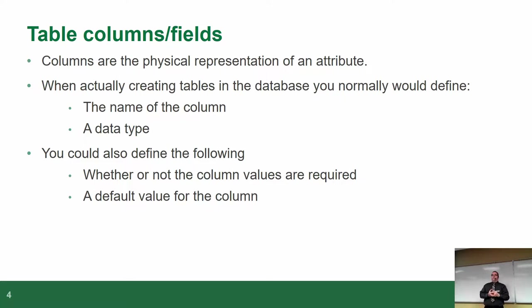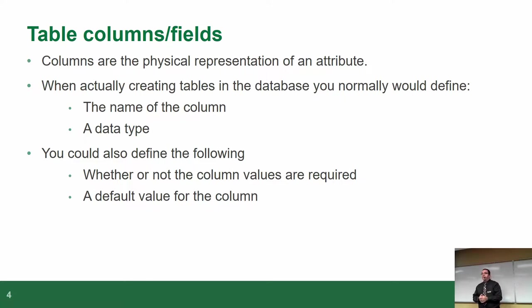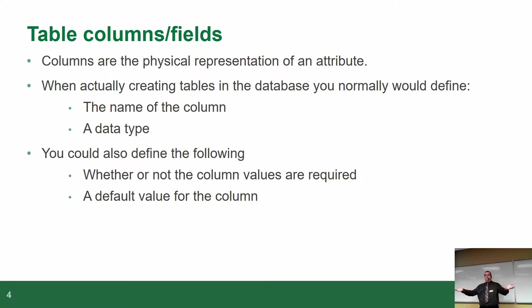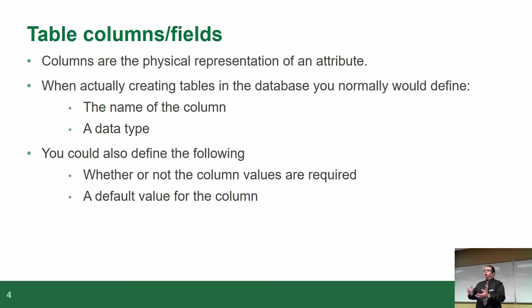They did sue him for theft because he stole two and a half months of my time while I figured out what everything was. So if you're going to name a column, name it something intelligent. If you're dealing with a person's name, call it 'name.' If you're dealing with a postal code, call it 'postal_code.' Name it after what it actually is. Don't call it 'fluffy' — that's a great way to have someone beat you down. You need to define the data type as well — whether it's a character, numbers, a date, or something else.